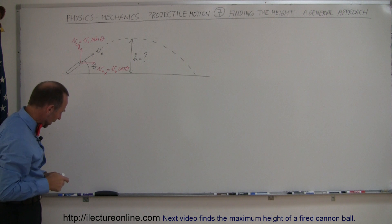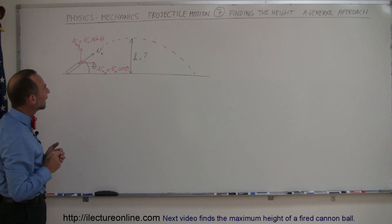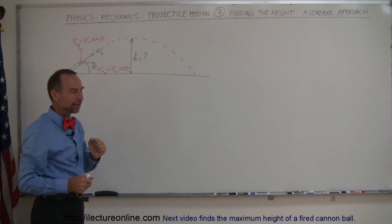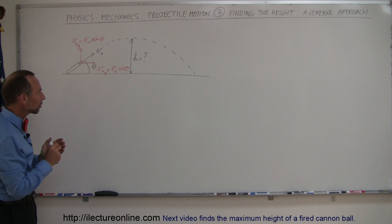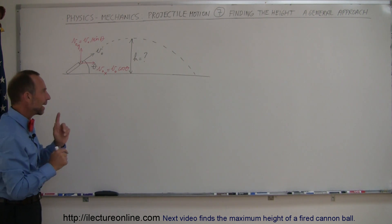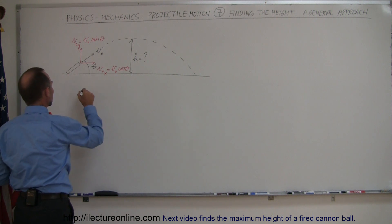So now we need to think about an approach and what I can see here is that when the projectile reaches its highest height, its maximum height, the velocity in the y direction will be momentarily zero. And since I don't know the time I'm going to try and use this equation right here.